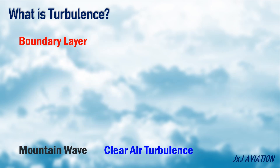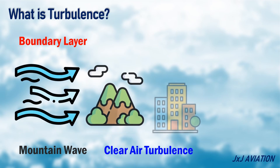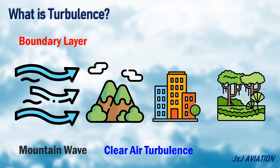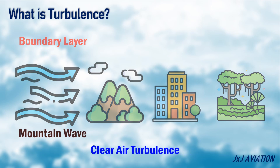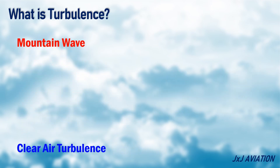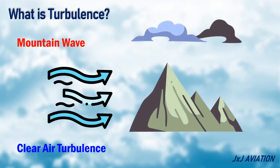Boundary layer turbulence is caused by the interaction of air with other solid surfaces such as hills, or buildings, or trees. Mountain wave turbulence is caused by wind blowing over mountains or hills.